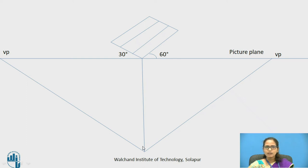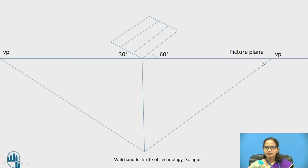From the station point you draw a line parallel to one side of the object. Wherever it cuts the picture plane, you get the first vanishing point. Then from the station point draw a line parallel to the second edge of the object. Where that line cuts the picture plane gives you the second vanishing point. In this way you get two vanishing points, which is the concept of the two point perspective.